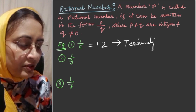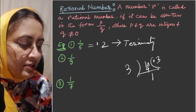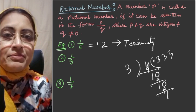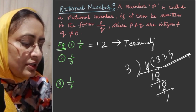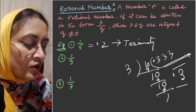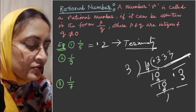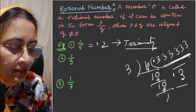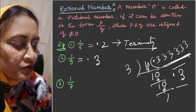Now take 1 by 3. When we divide 1 by 3, we get 0.333... — the remainder never becomes 0 and the digit 3 keeps repeating. So we write it as 0.3 repeating. This is a non-terminating repeating decimal. Non-terminating means never ending, but it does repeat.